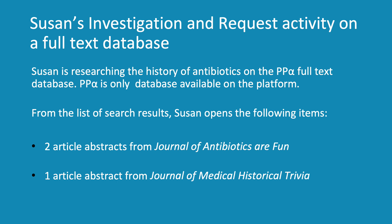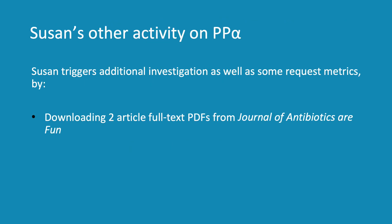Let's look at another scenario: Susan's investigation and request activity on a full-text database. Susan is researching the history of antibiotics on publisher platform Alpha full-text database. There's only one database available to search on this platform. From the list of search results, Susan opens two article abstracts from the Journal of Antibiotics of Fun and one article abstract from the Journal of Medical Historical Trivia. Susan then triggers additional investigation and some request metrics by downloading two full-text articles from the Journal of Antibiotics of Fun.